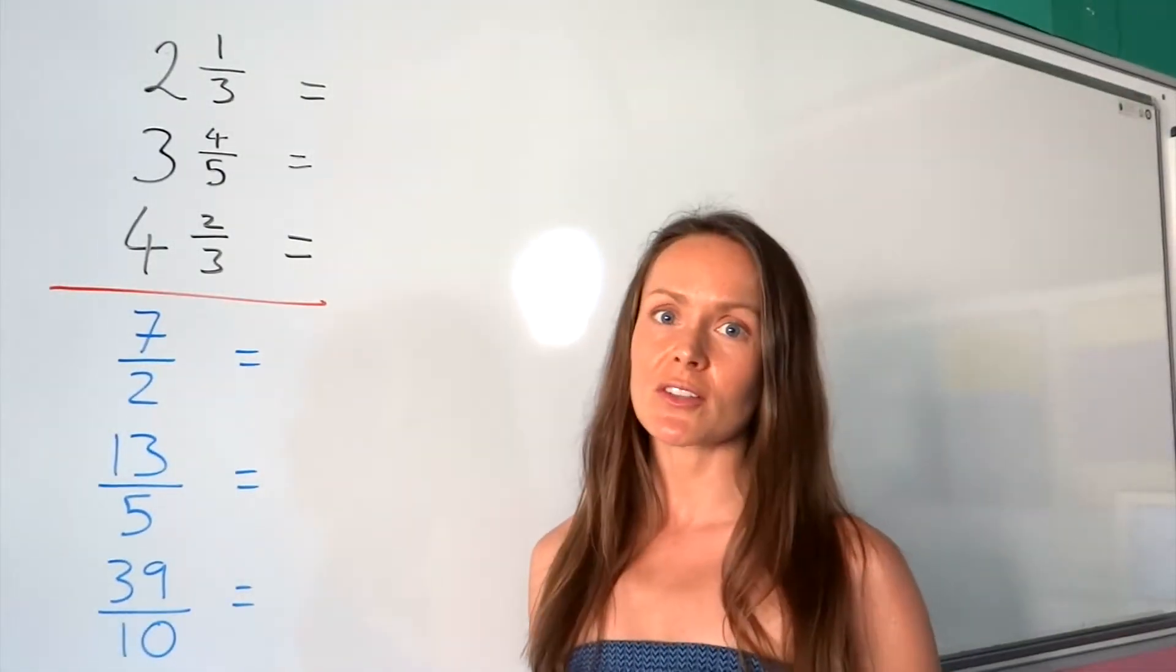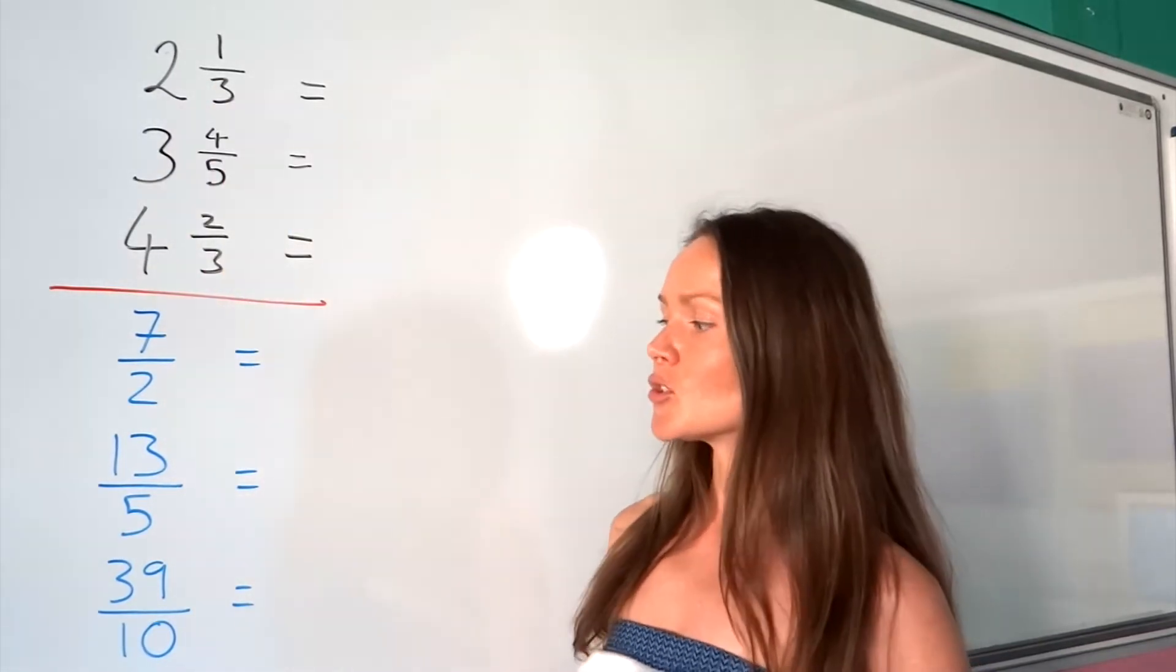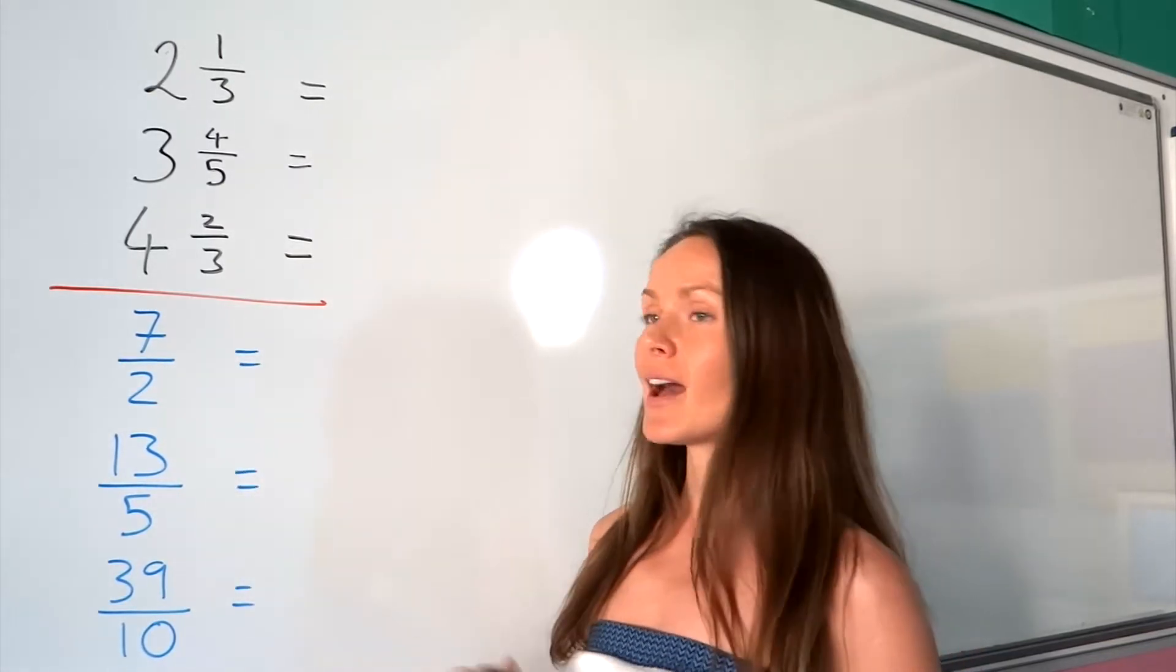Hey guys, in this video I'm going to show you how to turn mixed numbers, which look like this, into improper fractions, which look like this. In improper fractions, the number on top is bigger than the one underneath.